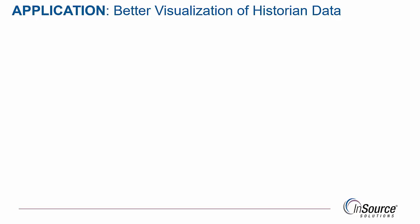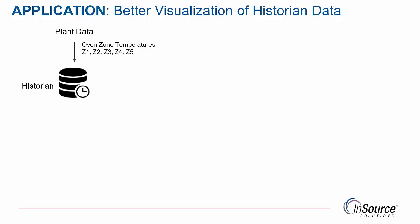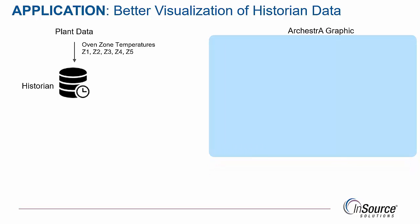Let's look at a practical application. Let's say we need to bring more information into the system to provide operators better visualization of what's happening from the Wonderware Historian. In this case, we have some plant data coming from PLCs that's being stored in the Wonderware Historian — specifically, oven zone temperatures, and there are five of them. The idea is to use the power of ArchestrA Graphics to show the operator information that may be beyond what's already there.